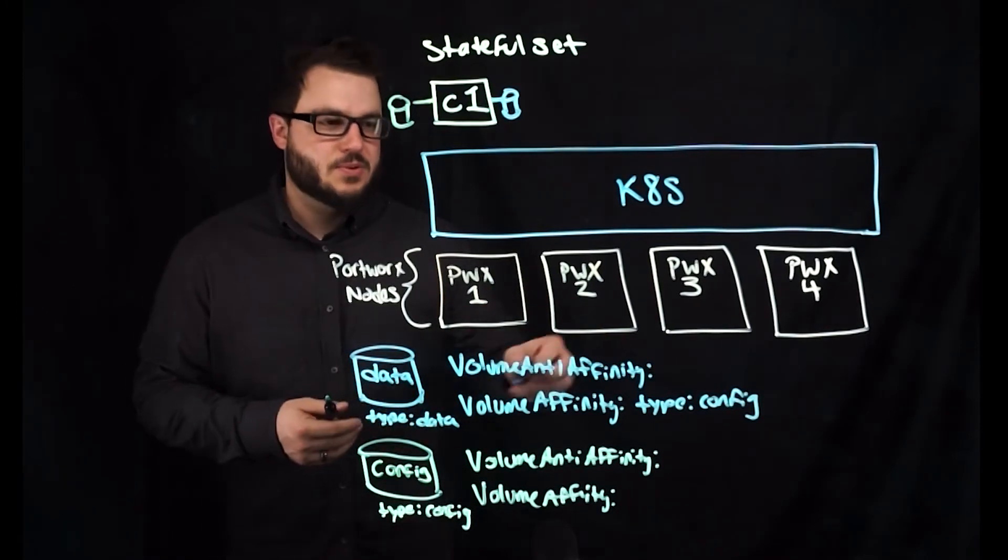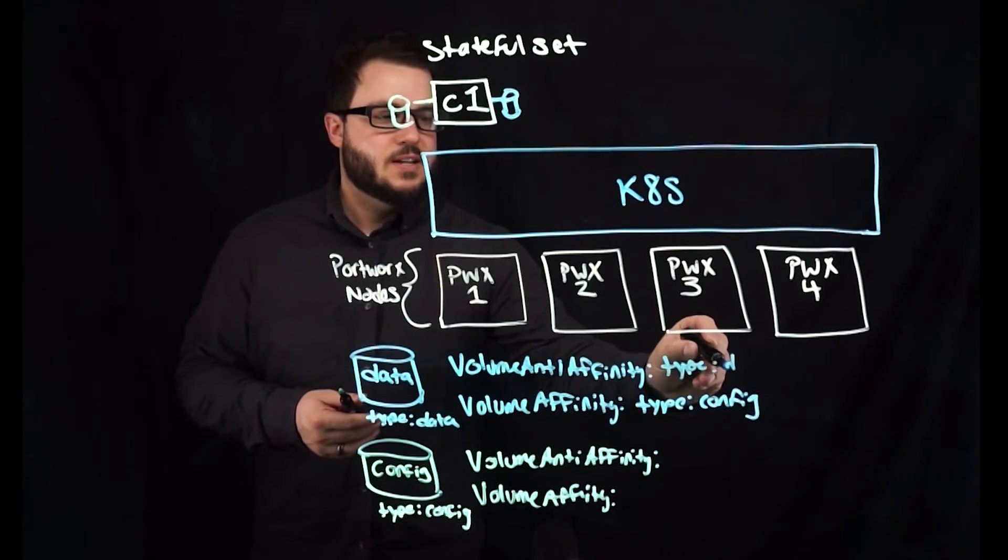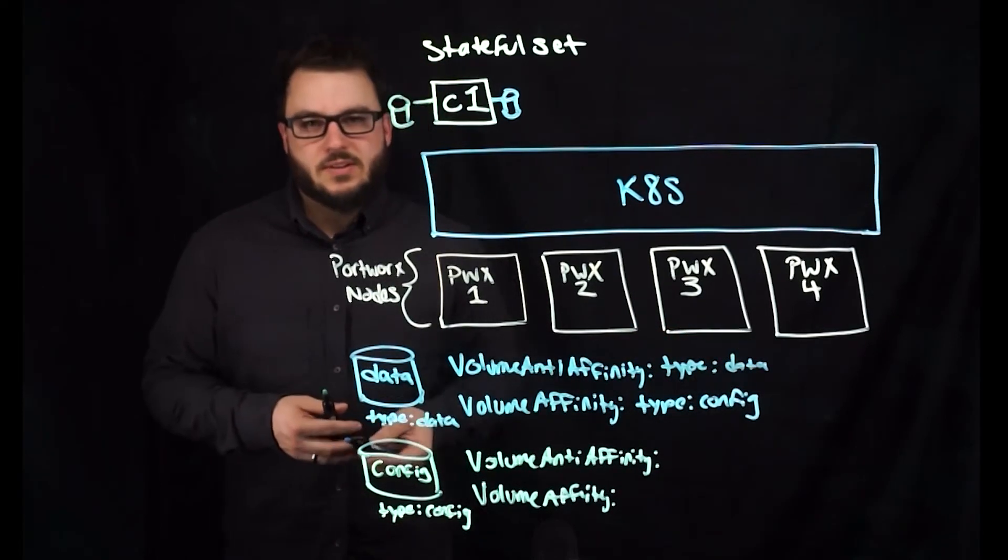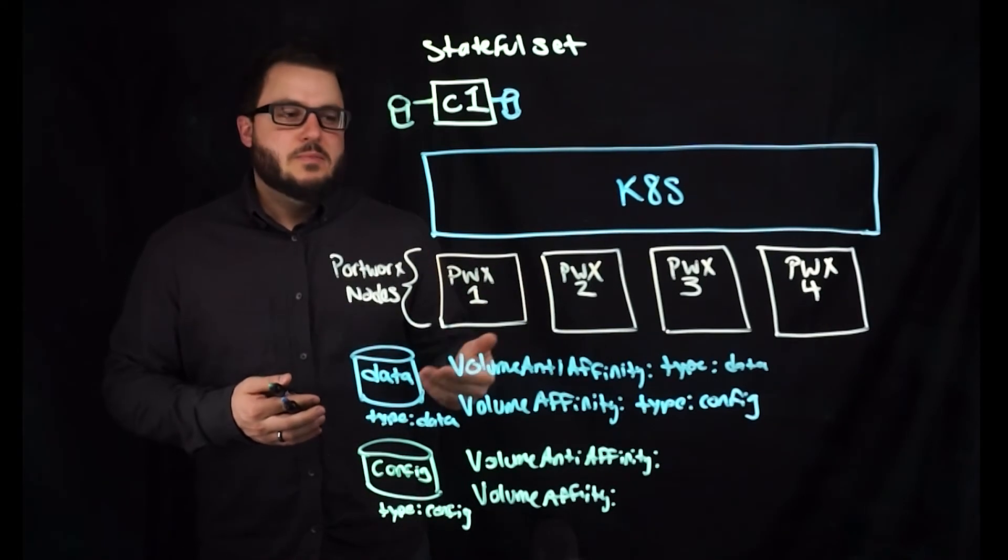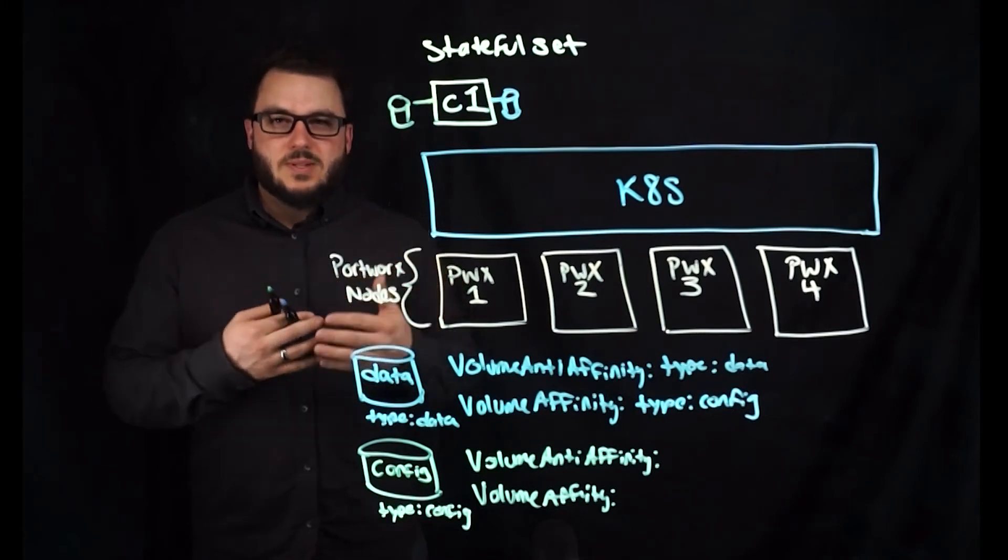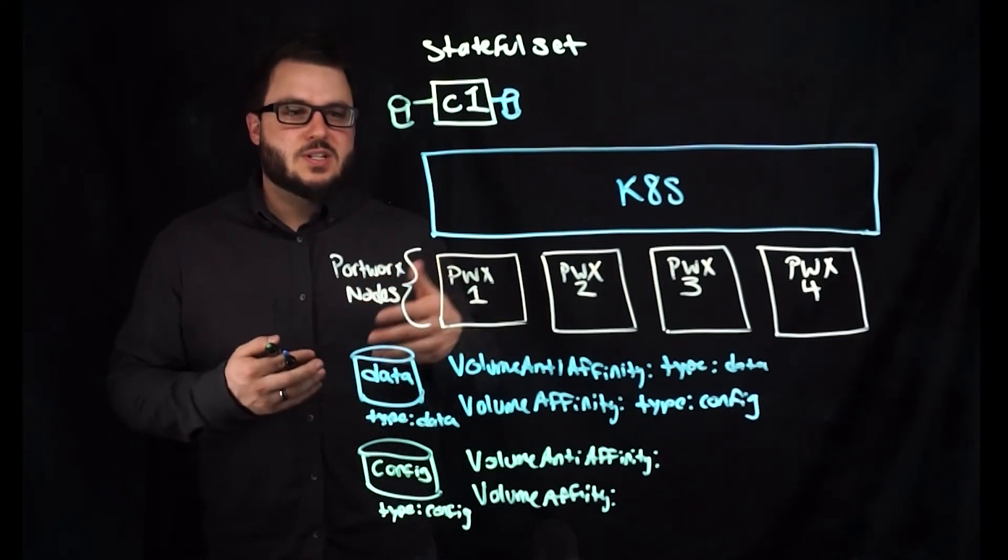Meaning that my data volume should always land next to a configuration volume. We want my anti-affinity rule to say, but don't let my data volume land next to other data volumes, meaning other nodes in our cluster also have data volumes, but we don't want them next to each other on the same node for things like failure resistance or data locality.